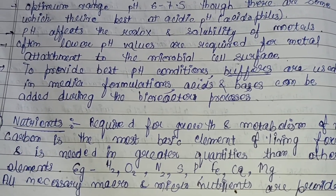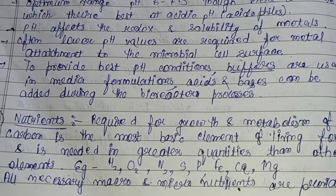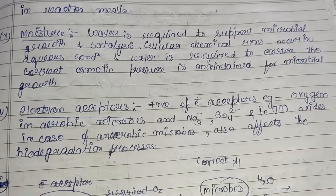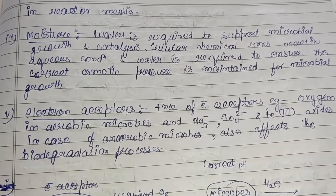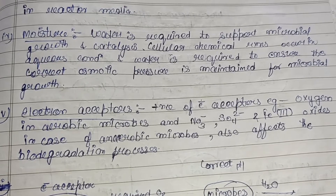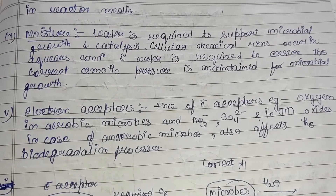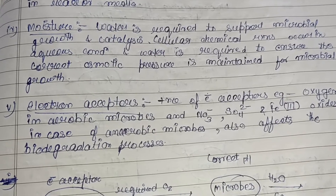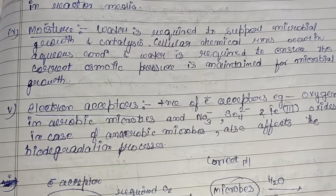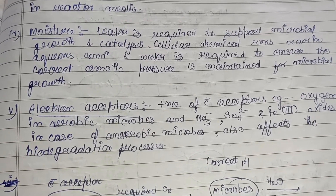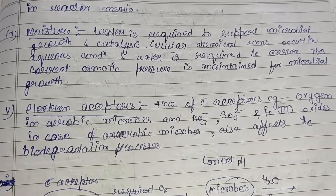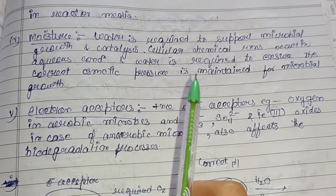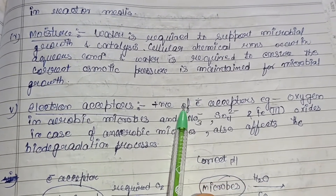Moisture is another factor. Water is required to support microbial growth and to catalyze cellular chemical reactions, which occur in aqueous conditions. Water is also required to ensure correct osmotic pressure is maintained for microbial growth. Water, or moisture, is thus a basic element needed for the microbial growth process and the process of bioremediation.